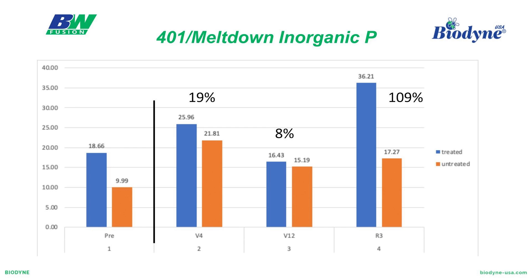The other thing to note about this is that this is not measuring uptake — this is not taking uptake into account. This is just looking at plant available phosphorus. Inorganic P is plant available phosphorus, treated versus untreated.